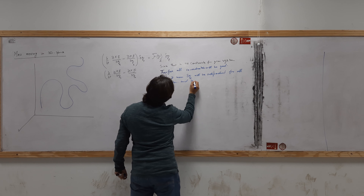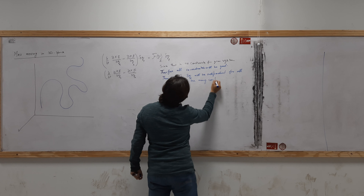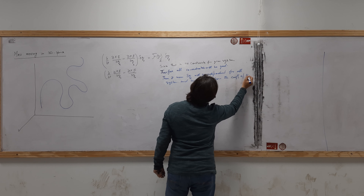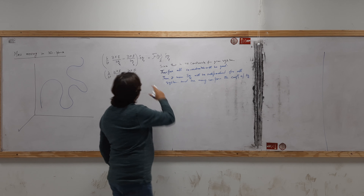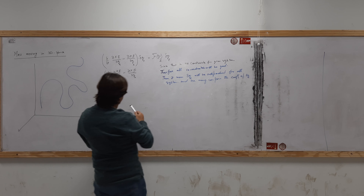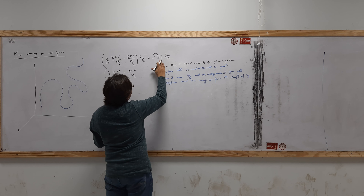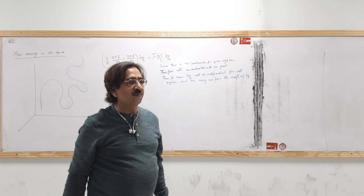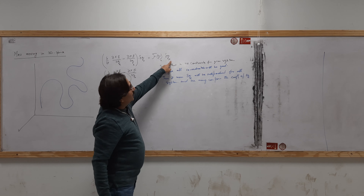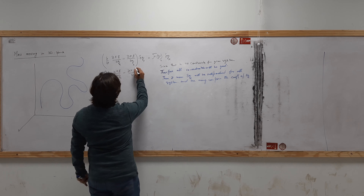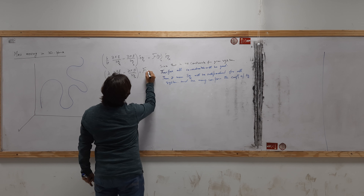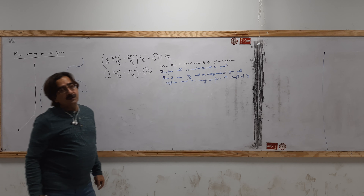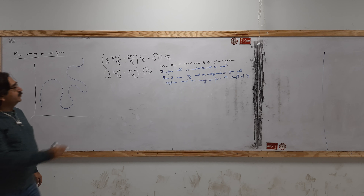We may compare the coefficient of Q_L. L is a dummy index, so we may replace it with any other index. For comparing the coefficient, we write it in this form. I may replace L with T, so this equation will become F_Q. What is F_Q? For a general force house, it is equal to... F_E_M partial Q_K.